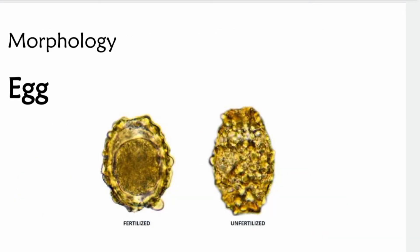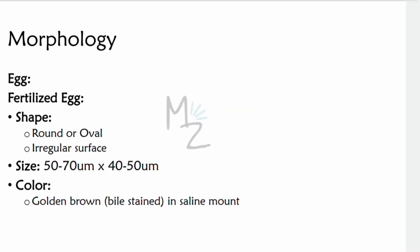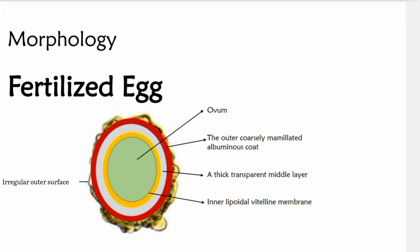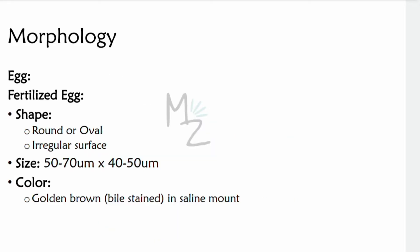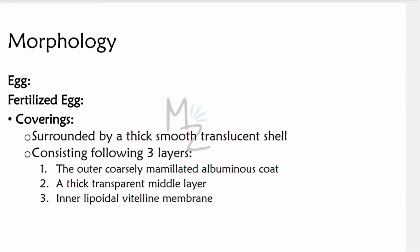Let's start with the egg first. It has two forms: fertilized and unfertilized. The fertilized egg is round or oval in shape with an irregular surface. It is 50 to 70 micrometers by 40 to 50 micrometers in size. It is golden brown because it is bile-stained, and it appears golden brown in saline mount. It is surrounded by a thick, smooth translucent shell consisting of three layers: the outer coarsely mammillated albuminous coat, a thick transparent middle layer, and the inner lipoidal vitelline membrane.